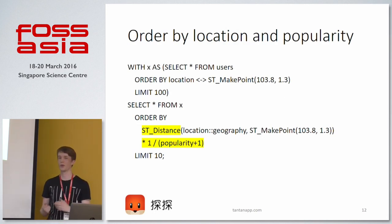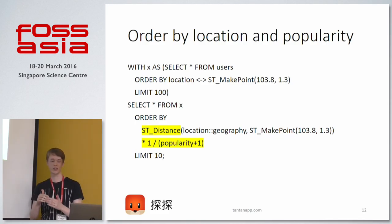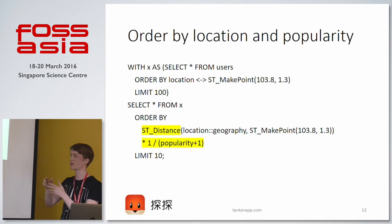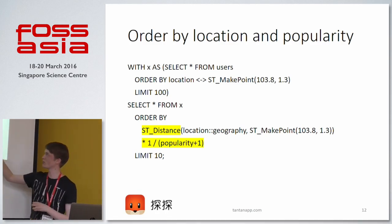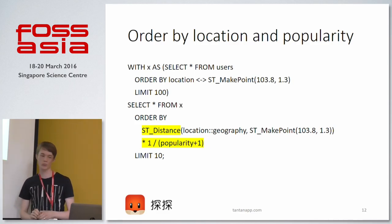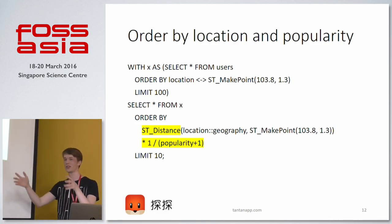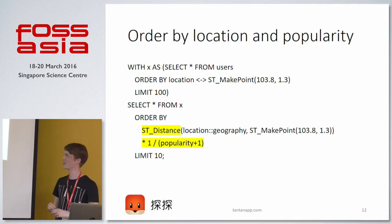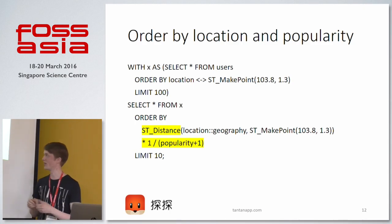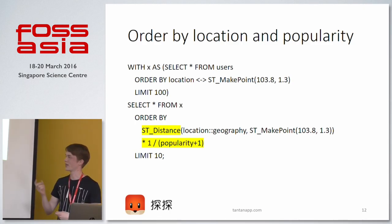What does this query look like when we want popularity to affect our user ranking? The normal way we currently do this in production is by first selecting a pretty big amount of users — in this case 100 — and then in the second part we take those 100 users and order them by distance times popularity, with a LIMIT of 10. We pick the 10 best among those 100 based on distance times popularity. Since popularity is better when higher and distance is better when smaller, I used 1 divided by (popularity + 1), where the +1 avoids division by zero.